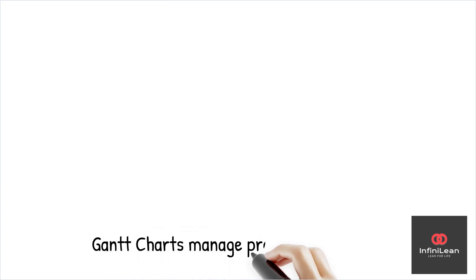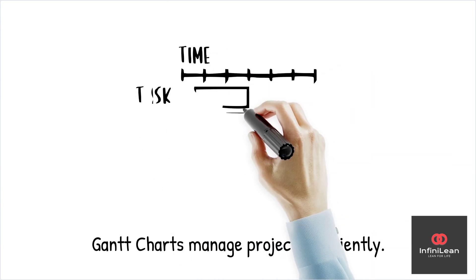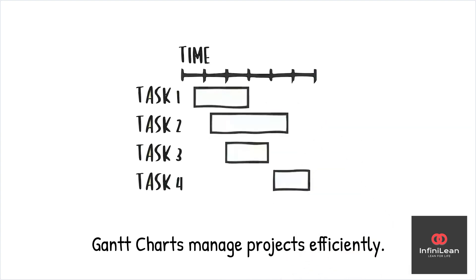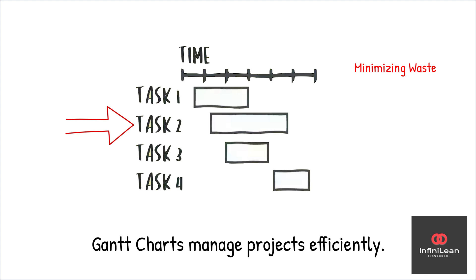Gantt charts are an essential tool for managing projects efficiently. They provide a visual timeline that outlines all tasks involved in a project, making it easier to track progress and identify potential bottlenecks. Utilizing a Gantt chart allows you to effectively manage the workflow, ensuring every step aligns with Lean Six Sigma principles, which focus on minimizing waste and maximizing efficiency, driving continuous improvement in your projects.